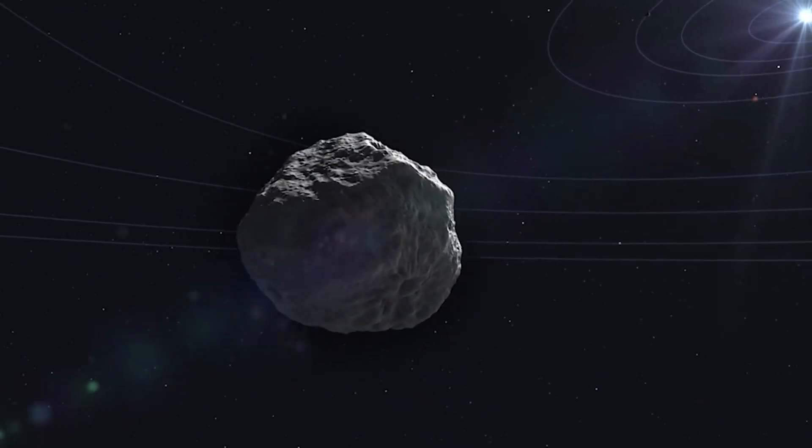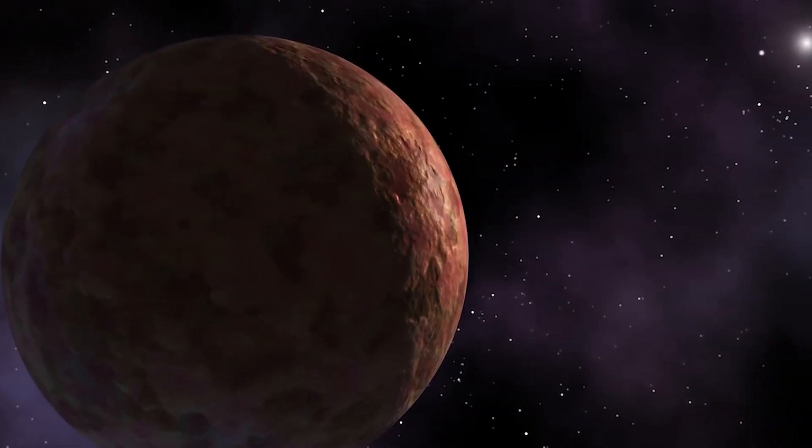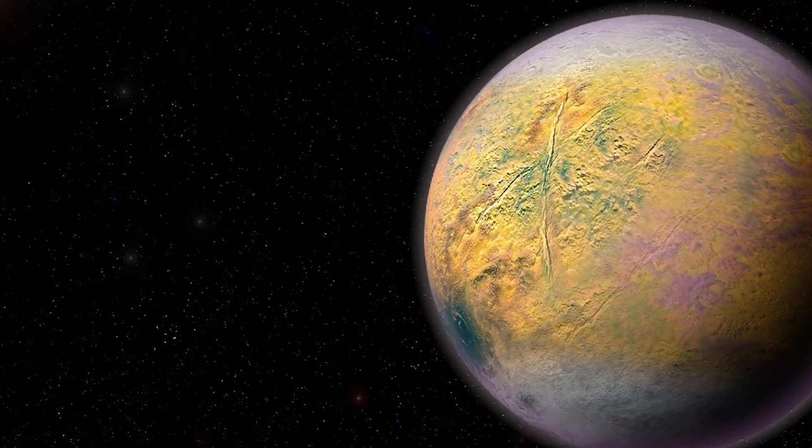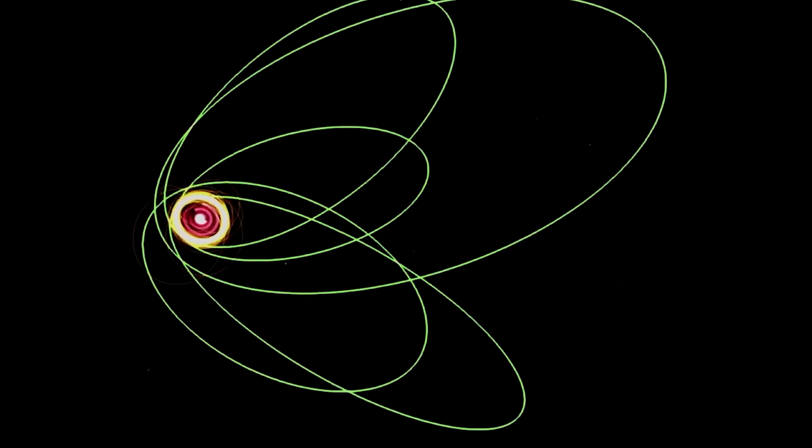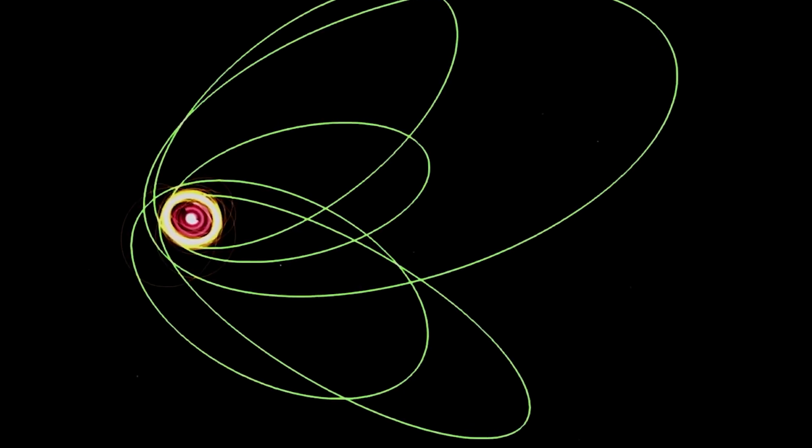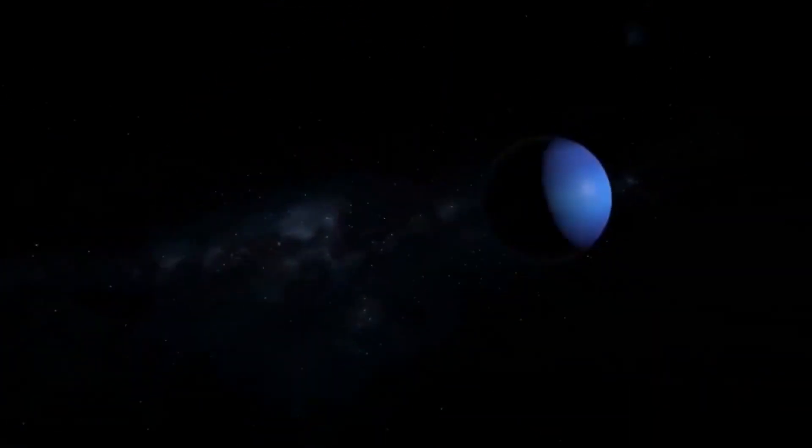Since then, some scientists have been searching for Planet 9, while others have disputed the existence of the undiscovered huge planet. Planet 9 is likely to be on the outer, icy reaches of our solar system.